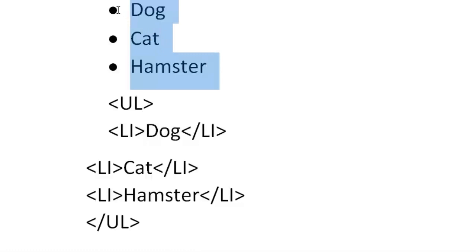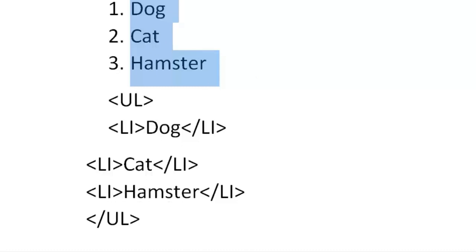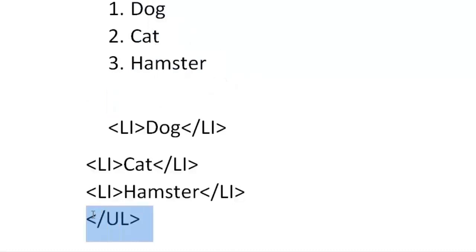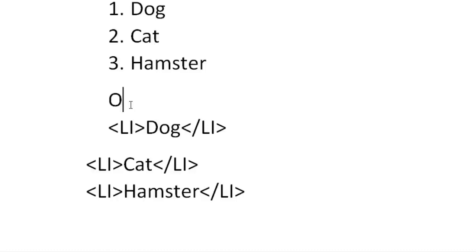Now that you understand that, let's talk about ordered lists — something like 1, 2, 3, 4, 5. If I switch to an ordered list, the only items that need to change are the open tag and the close tag — everything else, the li's, stay the same. If you think about the abbreviation for ordered list, that's OL. So we open the ordered list with OL, have the three items with their li tags, and then close with slash OL.